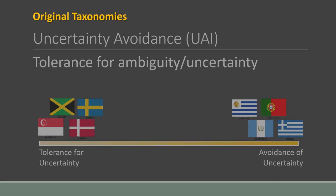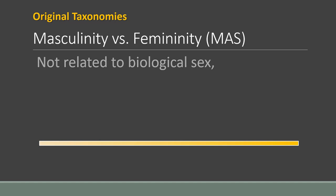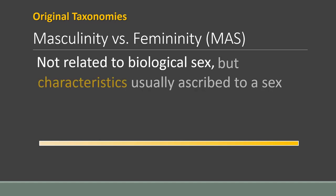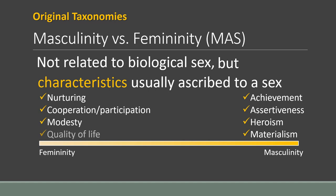The last of Hofstede's original taxonomies is the masculinity versus femininity dimension, abbreviated as MAS. This doesn't refer to biological sex, but the characteristics usually ascribed to a sex. Traditionally, males value achievement, assertiveness, heroism, and materialism. Females, on the other hand, value nurturing, cooperation, participation, modesty, and quality of life. Further, masculine societies tend to draw a line between what men do and women do—take care of the children, cook, etc. Men's work is men's work and women's work is women's work.